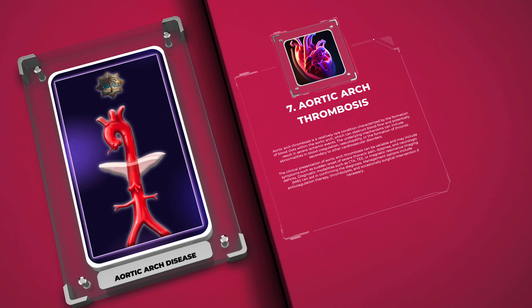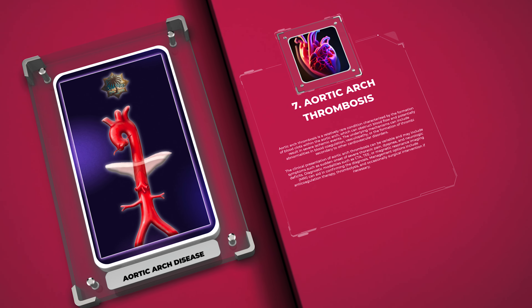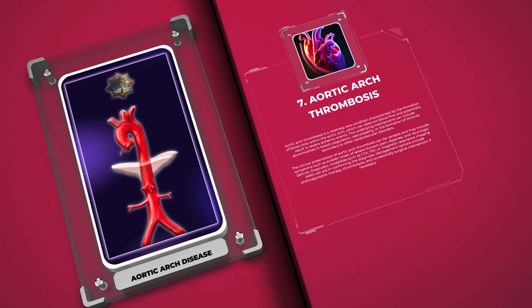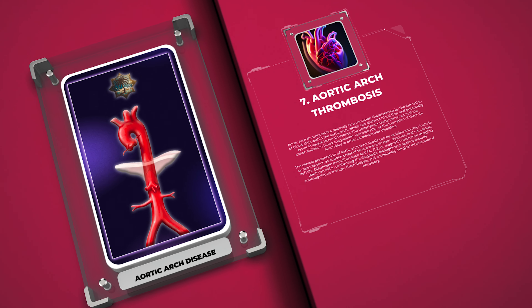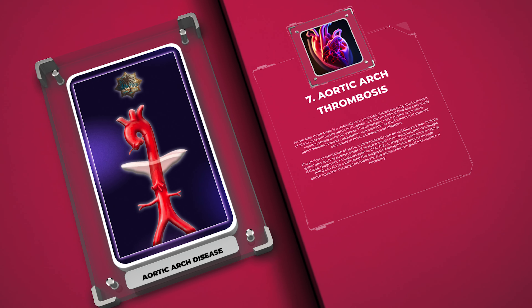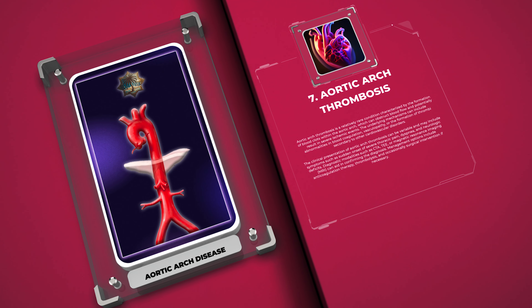The underlying mechanisms of aortic arch thrombosis can include abnormalities in blood coagulation, vasculopathy, or the formation of thrombi secondary to other cardiovascular disorders. The clinical presentation can be variable and may include symptoms such as sudden onset of severe thoracic pain, dyspnea, and neurologic deficits. Diagnostic modalities such as CTA or MRI can aid in confirming the diagnosis.